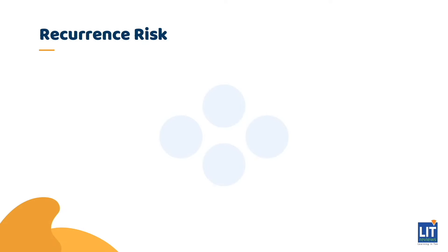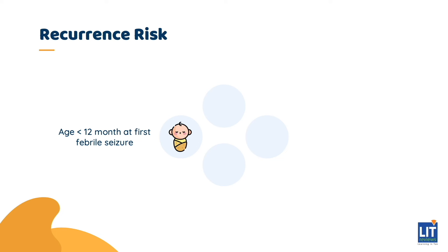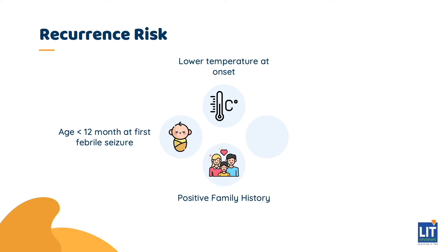Higher recurrence risk is associated with several characteristics. Age at onset of the first febrile seizure is prognostic, with recurrence rates of 50 to 65% shown in children with a first febrile seizure before the age of 12 months, compared with rates of about 20% in older children. Other factors associated with increased risk for recurrent febrile seizures include lower temperature at the onset of the seizure, family history positive for febrile seizures, and complex features.